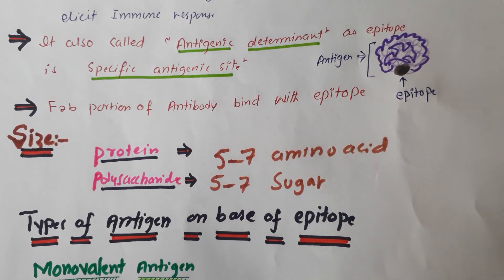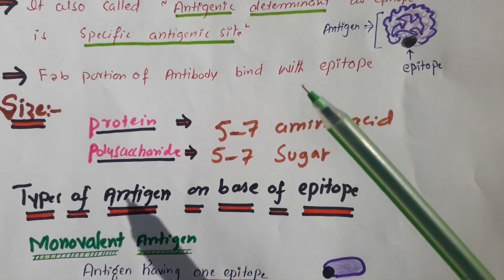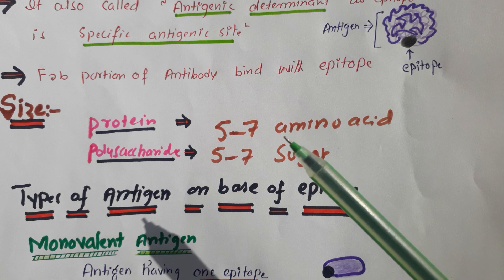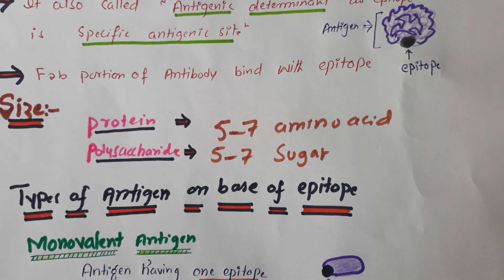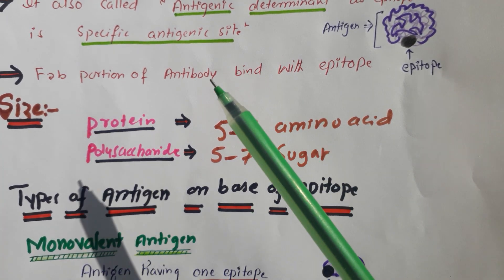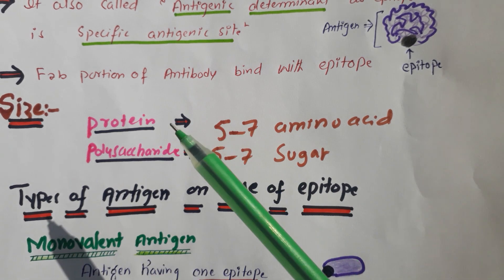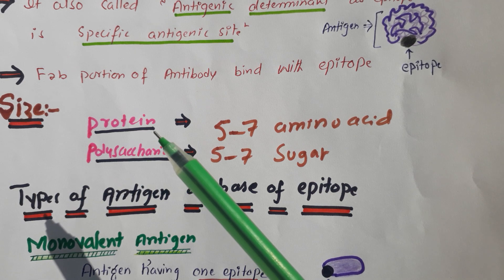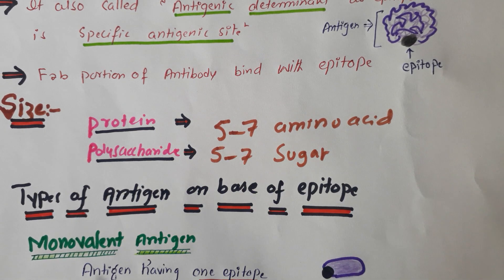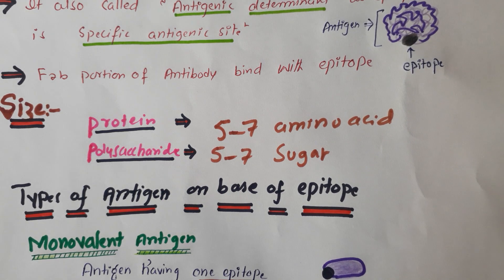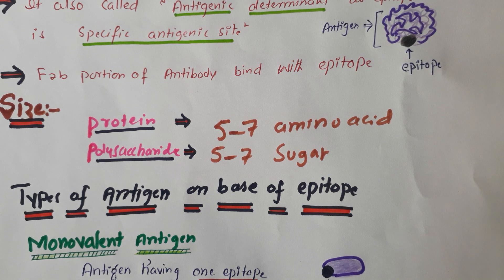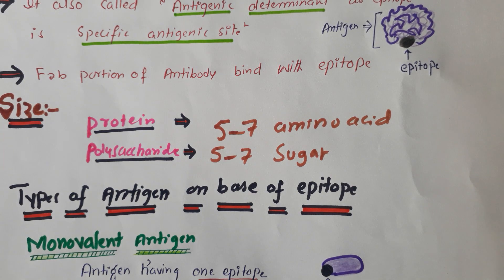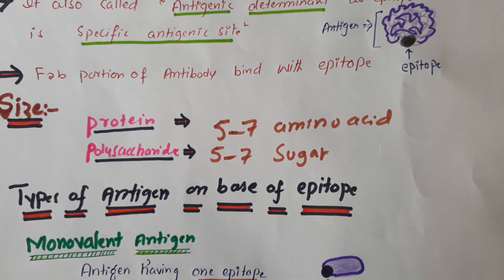Now, regarding the size of the epitope: as we already said, the most common antigens are protein in nature, and secondly we have polysaccharide, which you can also call carbohydrate. If the antigen is protein in nature, then the epitope is going to consist of five to seven amino acids — or simply five amino acids. For polysaccharide, since it is made from sugar, if the antigen is polysaccharide then the epitope will consist of five to seven sugar units, or simply five sugar units.